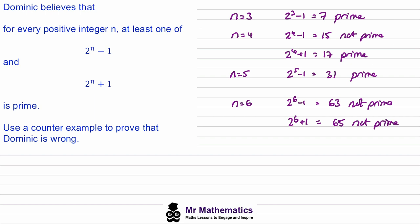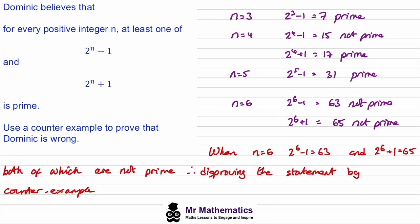So we've shown that the example when n equals 6 disproves this statement. Our conclusion is: when n equals 6, 2 to the 6 minus 1 equals 63, and 2 to the 6 plus 1 equals 65, both of which are not prime. Therefore, this statement is disproved by a counter example.